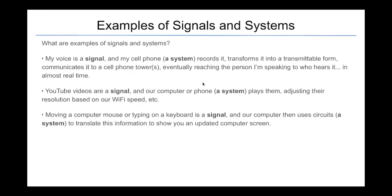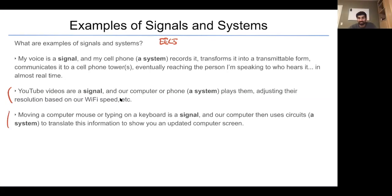We can study some concrete examples of signals and systems. One example, my voice is a signal. The cell phone is a system that records it, transmits it, communicates it, and then finally it reaches another person who hears it in real time. YouTube videos are a signal. Our computer or phone is a system that plays these videos. They can adjust the resolution based on our wifi speed. They can adjust the playback speed depending on how fast or slow we want the video to go.